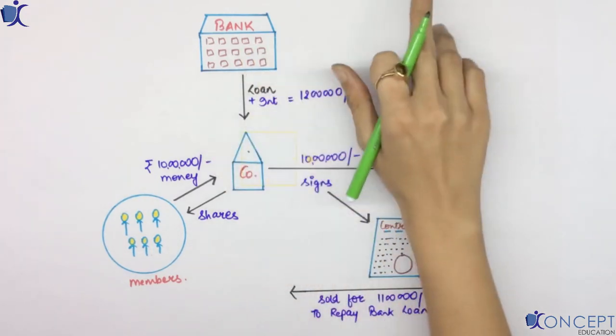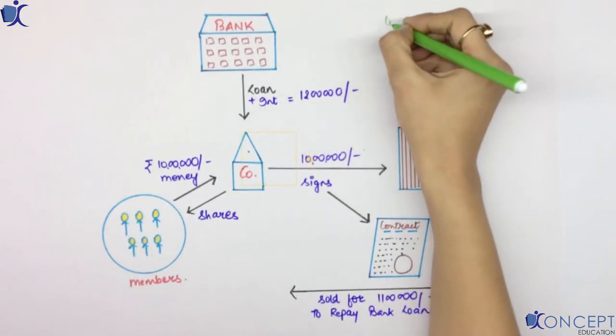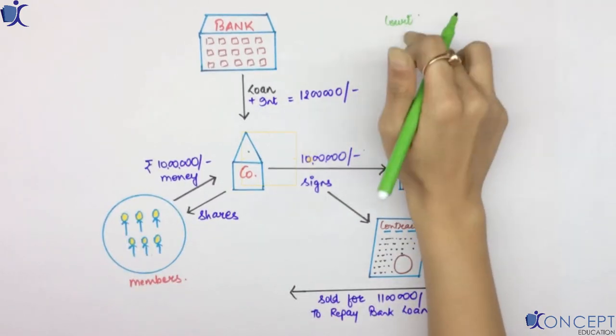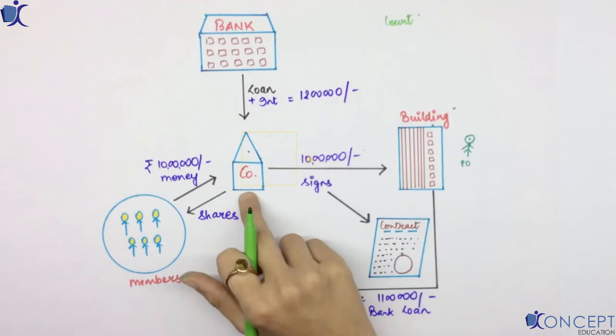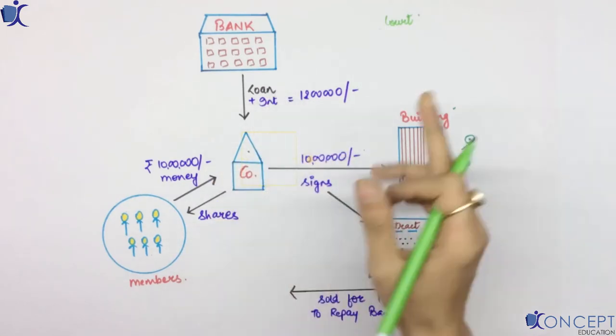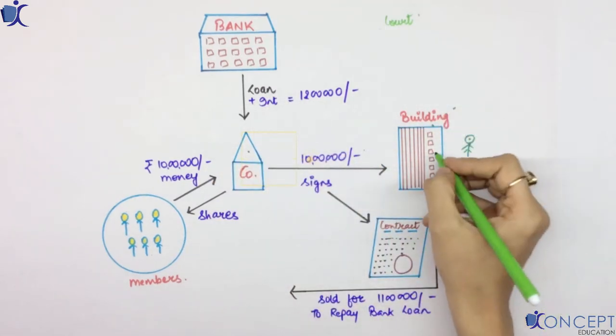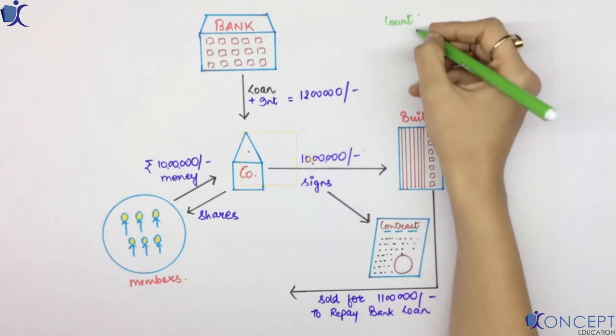Bank then approaches a court. The court orders the company that you have to repay the loan. The company is like, Sir, I don't have any money. I just have this building with me. So then court orders, what will you do with this building?